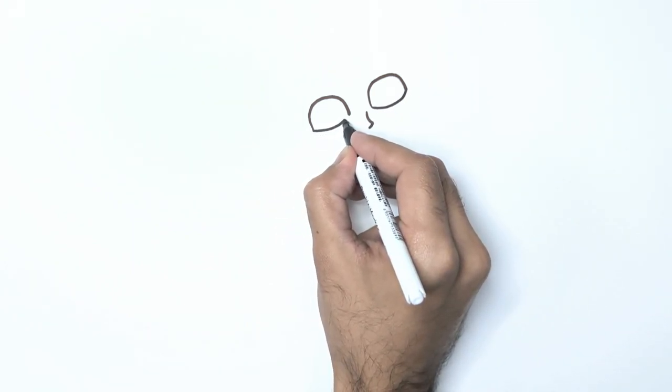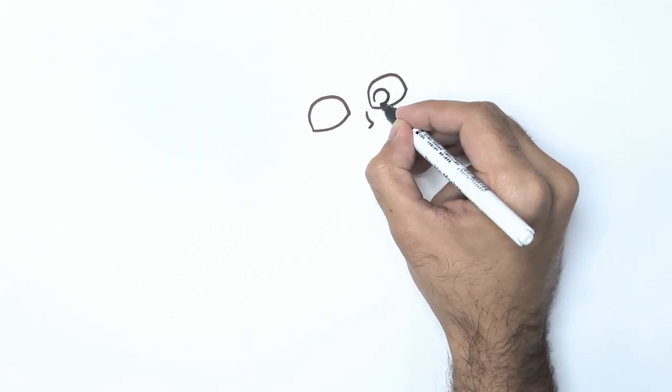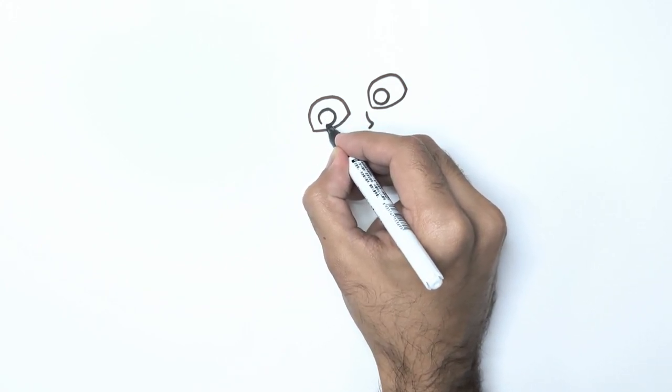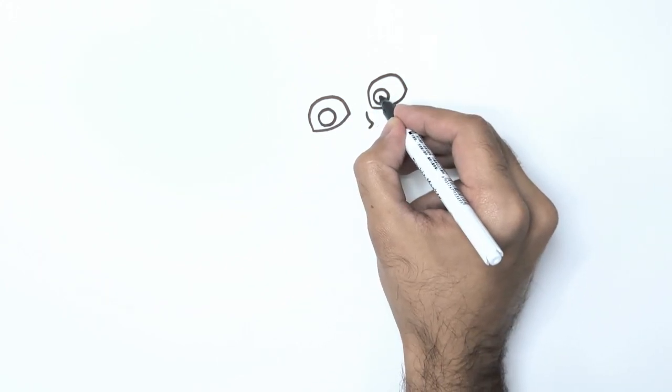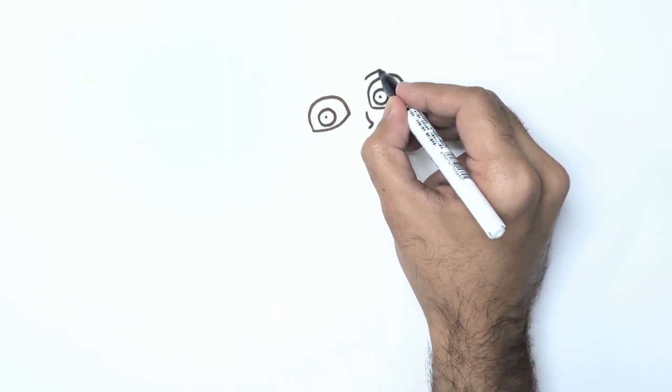Inside each of these shapes, add a circle with a little dot in the center to make his eyes. Don't forget to draw his eyebrows just above each eye.